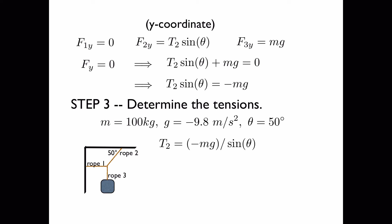Plugging in this information, we get the tension of rope 2 to be 1,280 N.